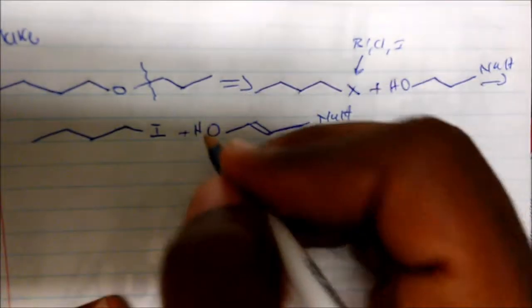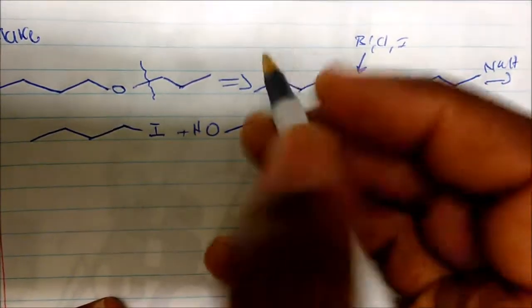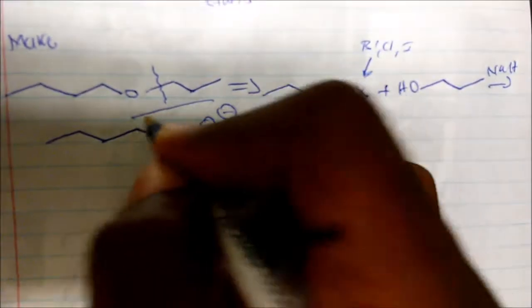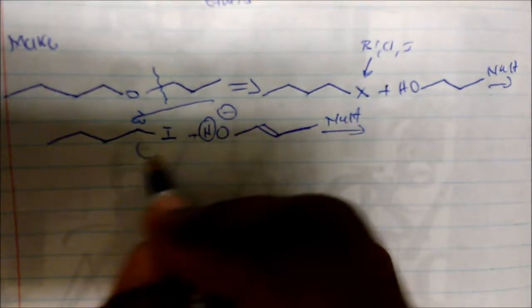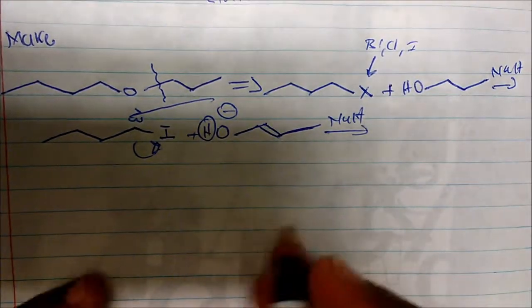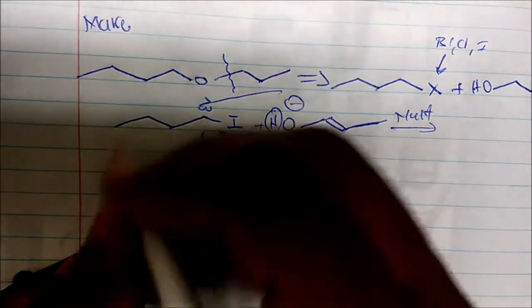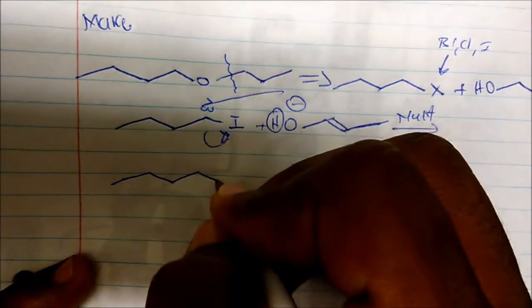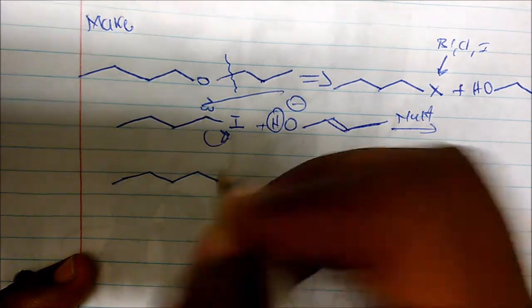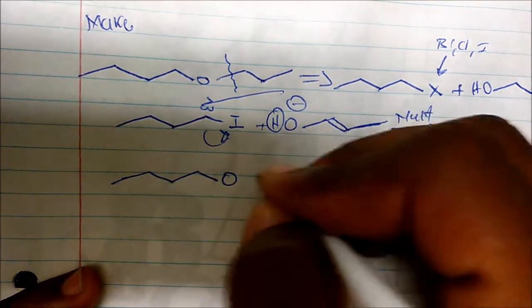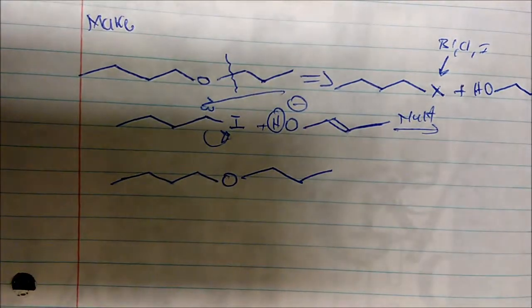Oxygen gets deprotonated, has a negative charge, attacks my carbon, dispels my iodide. So now I get this whole section that is bonded to an oxygen that has this propyl group there. That will be the retrosynthesis of this molecule.